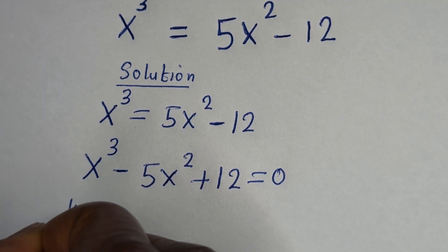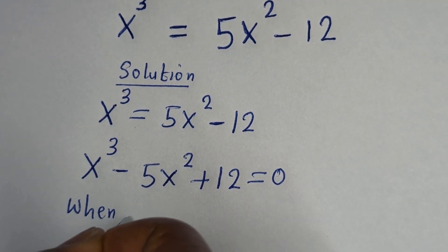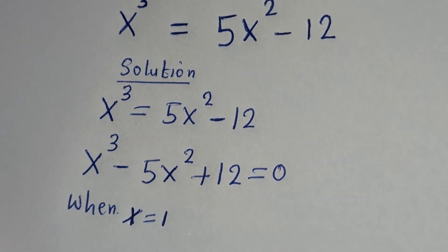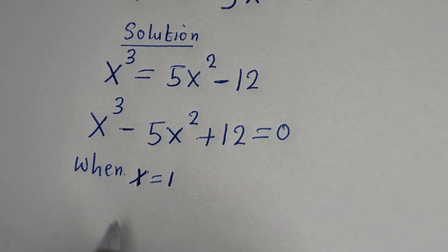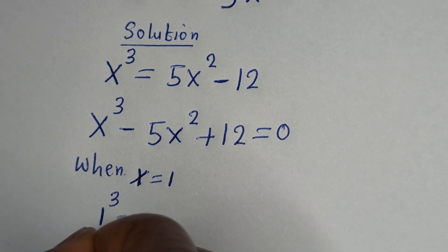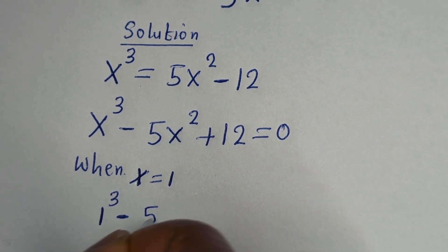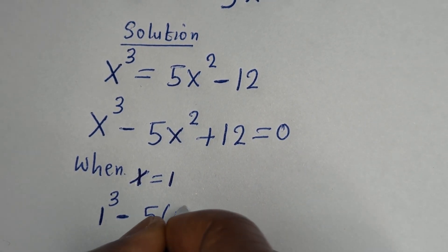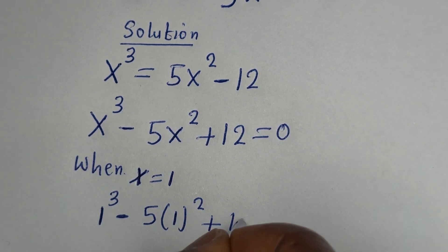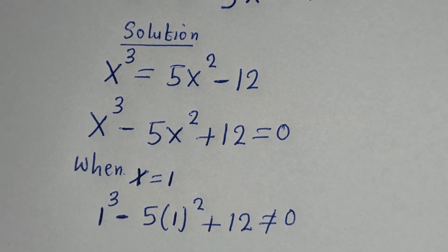When s is equal to 1, we have 1 raised to power 3 minus 5 times 1 squared plus 12. This is not equal to 0.